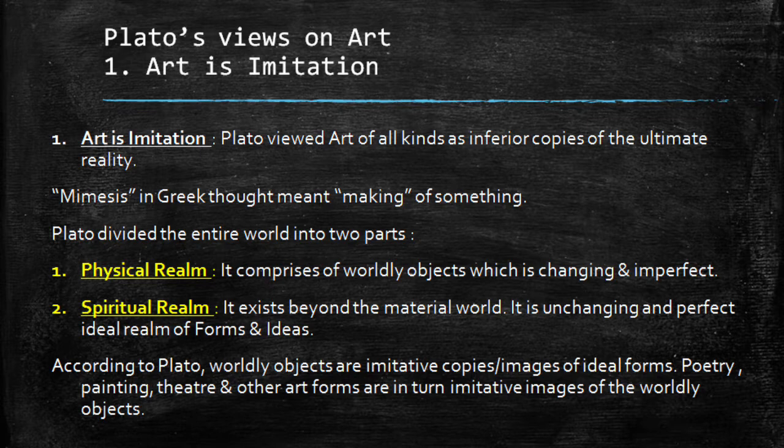The first point you need to mention in your answers is that art is imitation. Plato viewed art of all kinds — which included poetry, theater, and painting — as inferior copies of the ultimate reality. In this regard he introduced the word mimesis. Mimesis in Greek thought meant the making of something which was already present. In Plato's definition, mimesis means the making of a copy of some original.